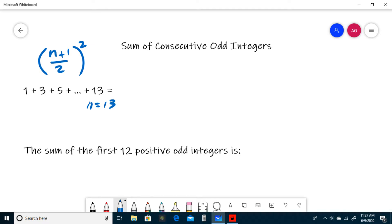Also keep in mind this sequence has to start with a 1 in order for this to work. So to find the sum just plug 13 into our formula. So we have 13 plus 1 divided by 2 all squared.